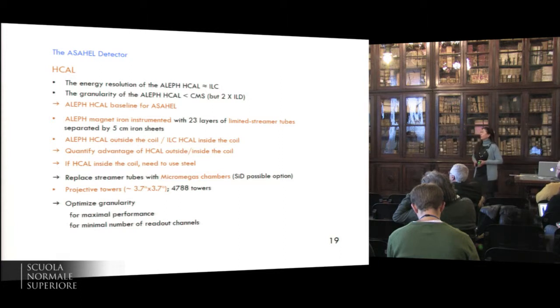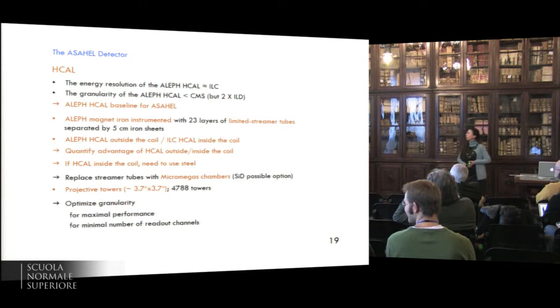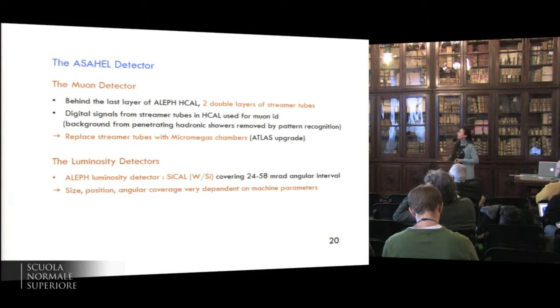The same for HCAL, we could keep the ALEF HCAL as a baseline, mainly the geometry. Now, the question is to quantify the advantage of having the HCAL inside or outside the coil. And then if one puts the HCAL inside the coil, one needs to replace the iron with steel. And here also we would replace the streamer tube with Micromegas chambers. That is also a possible option for ILD. We keep the projective towers where we would also optimize the granularity. For the muon detector, one would replace also the streamer tube with Micromegas chambers as it is foreseen for the ATLAS upgrade.